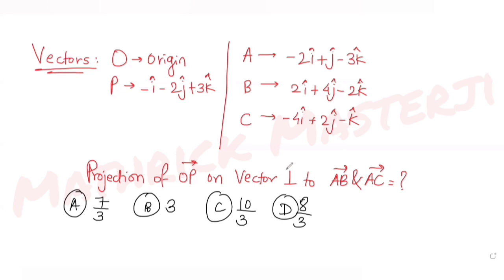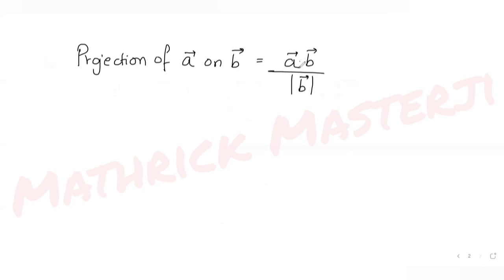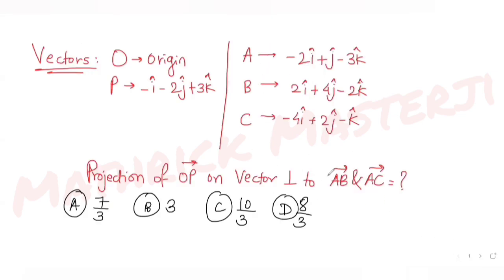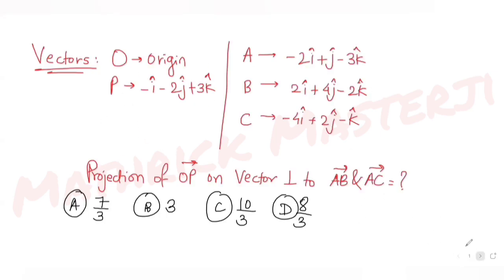So I need to find the projection of vector OP on a vector perpendicular to AB and AC. First, using the idea we already know: to find projection of a vector on another vector, take the dot product of the two vectors and divide by the magnitude of the second vector. Let's first find OP, which is P vector minus the O vector, which is the origin.